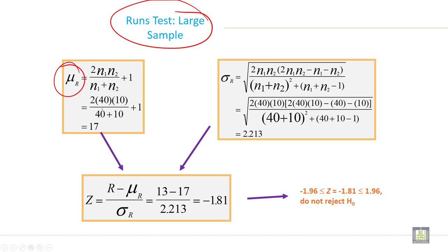So 2 times 40 times 10 divided by 40 plus 10, plus 1, and the total value will be 17. And here the total value will be 2.213 when you put all the values in the formula.